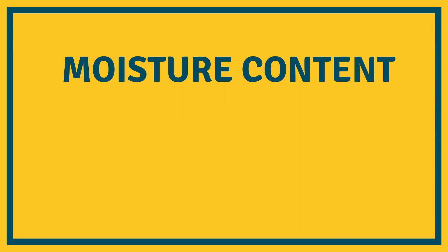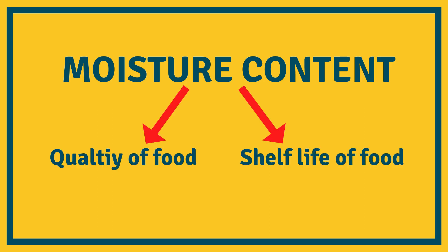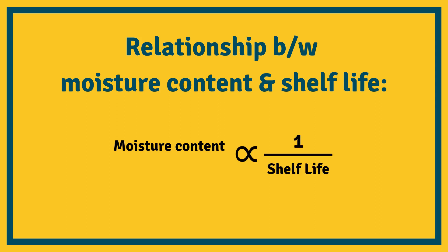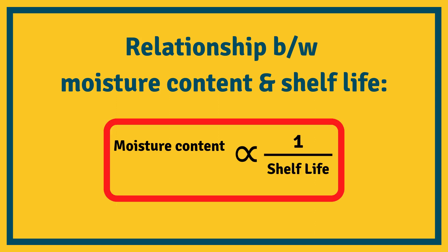Moisture content is an important property of food which is directly related to the quality and shelf life of the food. The relationship between moisture content and shelf life is given as: moisture content is inversely proportional to shelf life. That means higher the moisture content, lower will be the shelf life, or lower the moisture content, higher will be the shelf life.